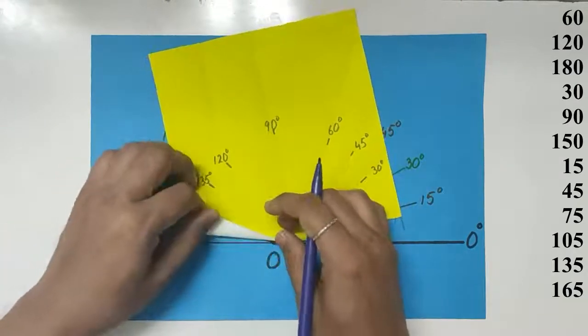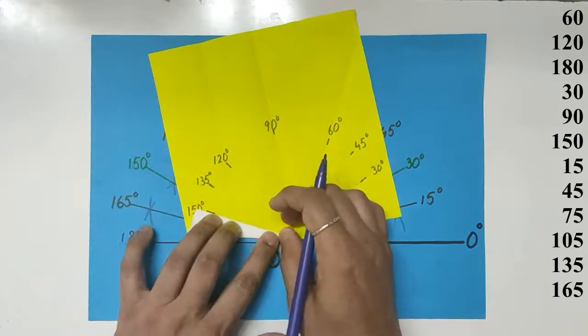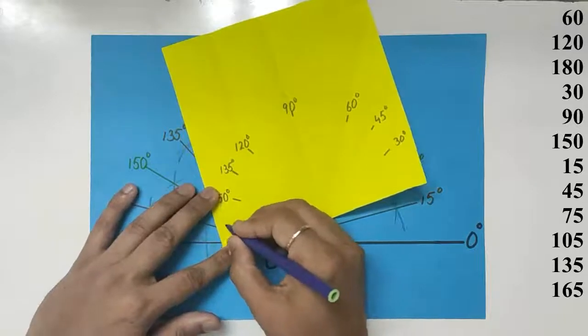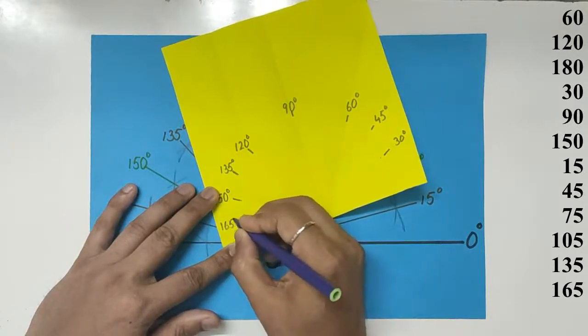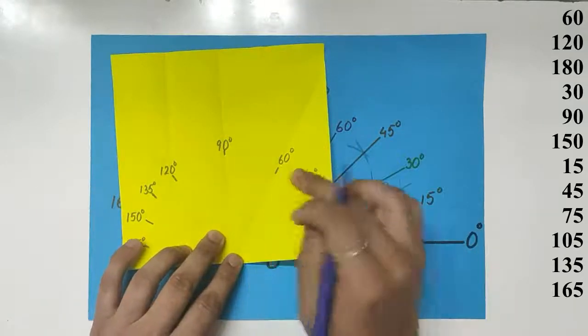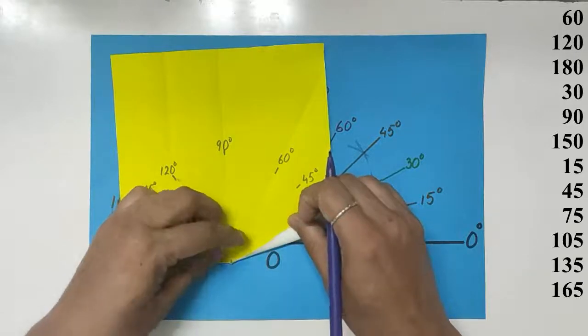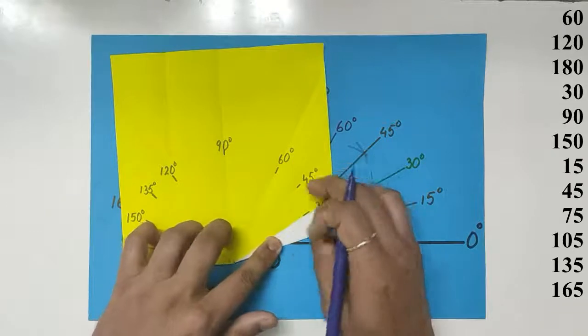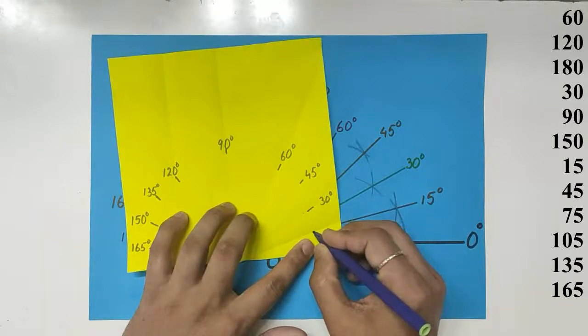We bisect 150. So we are adding another 15 degrees to 150 to get 165. Bisect 30 degrees to get 15. So that's 15 degrees.